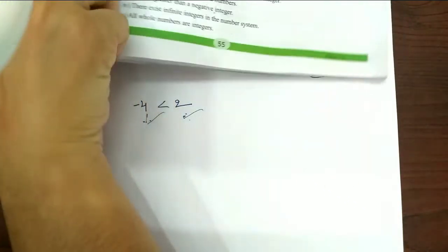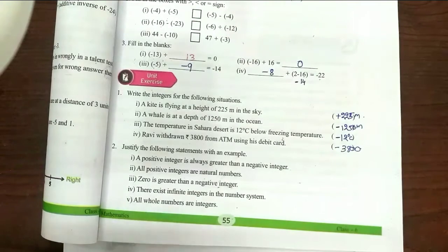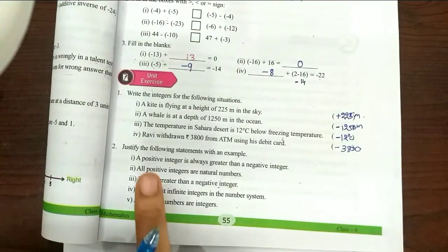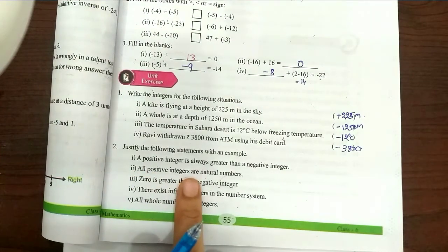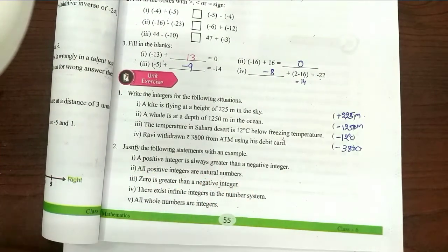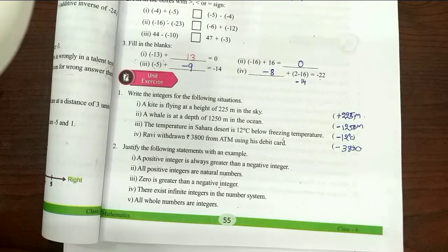So, for example, take a negative integer like minus 4 and a positive integer like 2. Between these two, 2 is the largest. A positive number is always greater than a negative number. Next, statement two: all positive integers are natural numbers. Yes, positive integers are natural numbers.